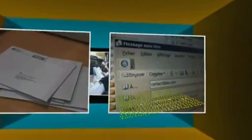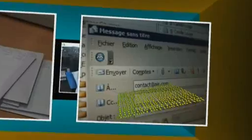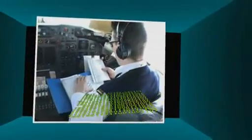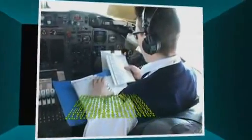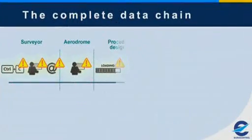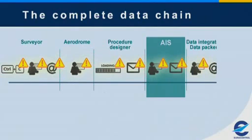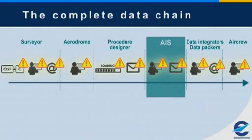Data packers and integrators reformat it into specific products like handbooks or onboard navigation databases. Thus, with just one example, we can see that the complete data flow is long, complex, and susceptible to errors at every stage.